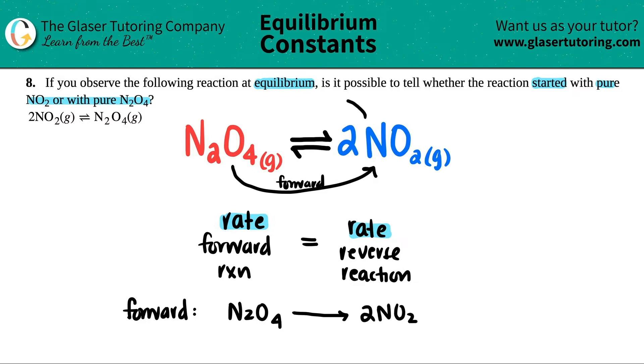The reverse is literally stating the reaction backward. So the reverse reaction would be, I had two NO2s and I'm making N2O4.